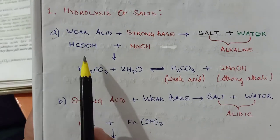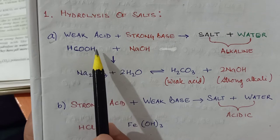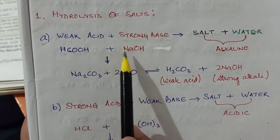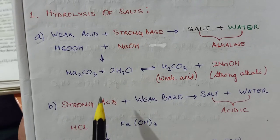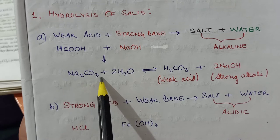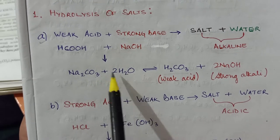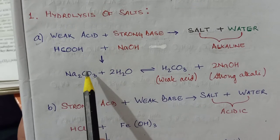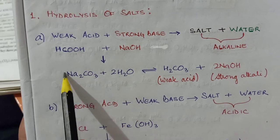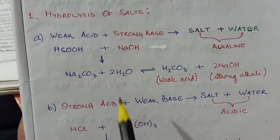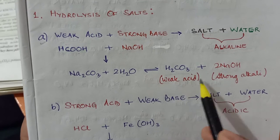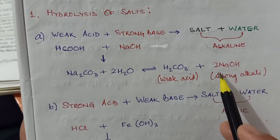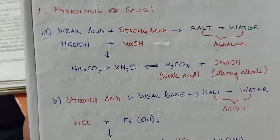For example, formic acid (HCOOH), which is a weak organic acid, reacts with sodium hydroxide, which is a strong base, to produce sodium formate salt plus water. Since the strength of acid and base are different, these products — salt and water — again react with each other to produce weak acid and strong alkali. Due to the presence of strong alkali produced, the whole solution will be alkaline in nature.